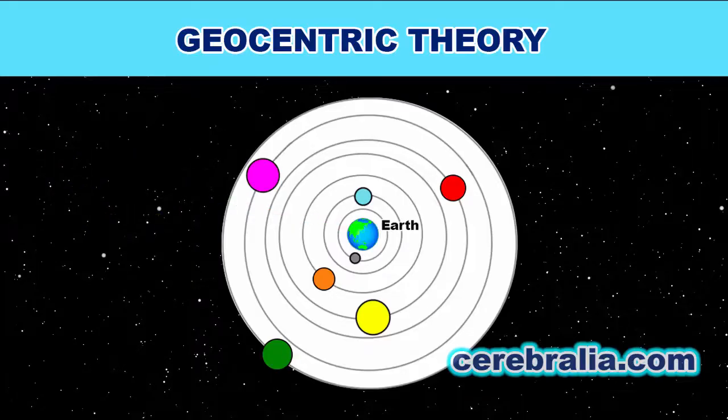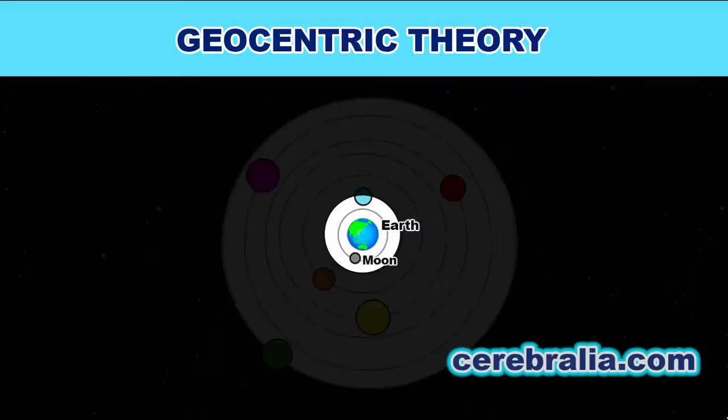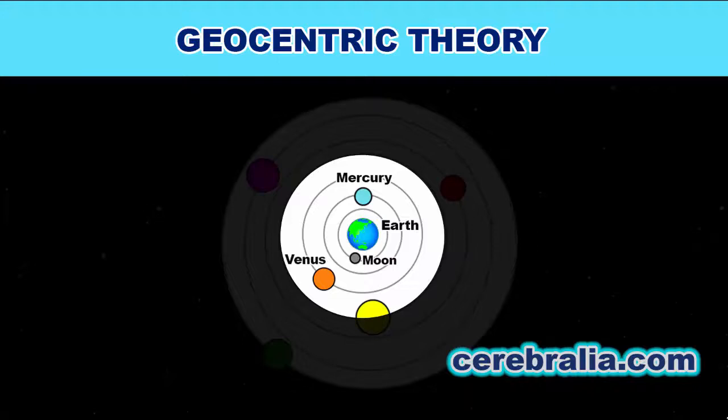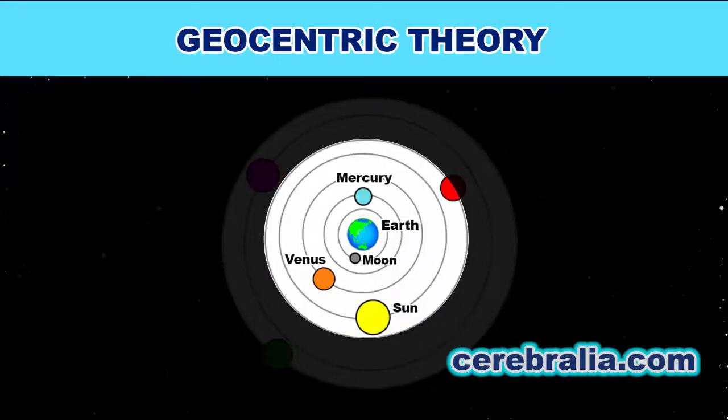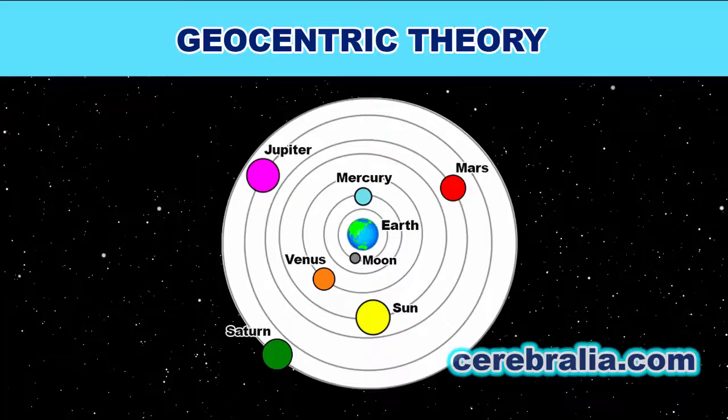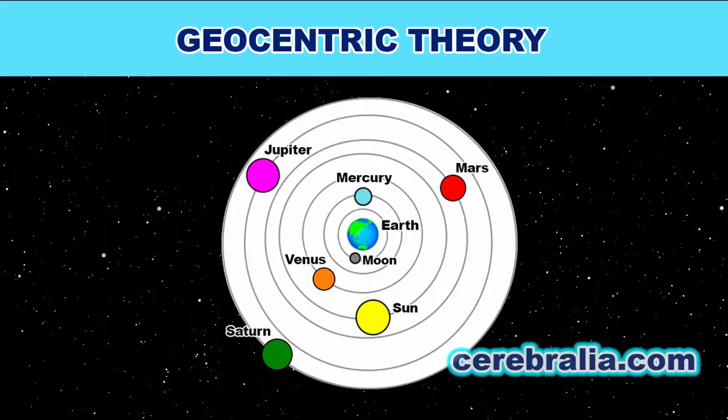He believed that the moon was orbiting on a sphere closest to the Earth, followed by Mercury, then Venus, and then the Sun. Beyond the Sun were a further three spheres when Mars, Jupiter, and then Saturn orbited the Earth. It was necessary for planetary orbits to be perfectly circular, as this reflected what was considered the perfection of creation.